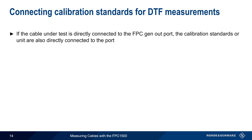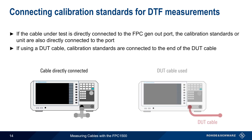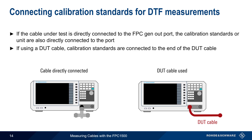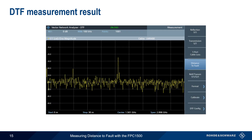If the cable under test will be directly connected to the FPC, then the calibration standards or calibration unit should also be connected directly to the port on the FPC. If, on the other hand, a DUT cable is used between the FPC and the cable under test, then the calibration standards are connected to the end of the DUT cable, since this is where the cable under test will be attached. Note that connecting the calibration standard to this point will remove the effect of the DUT cable from the final measurement. After disconnecting the calibration standards or unit and attaching the cable under test, the distance to fault measurement will run automatically.